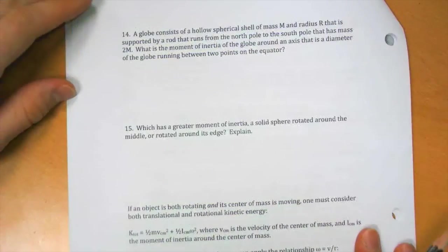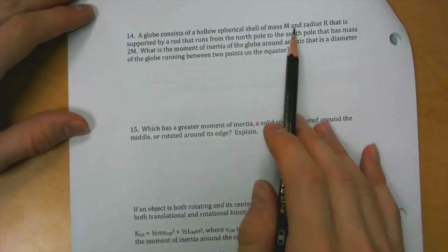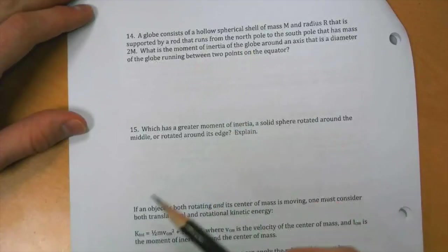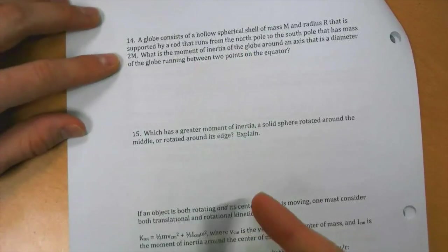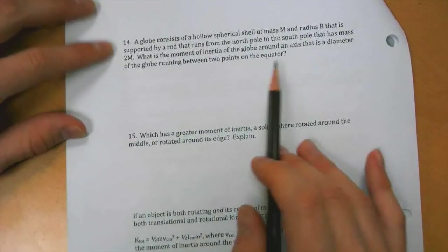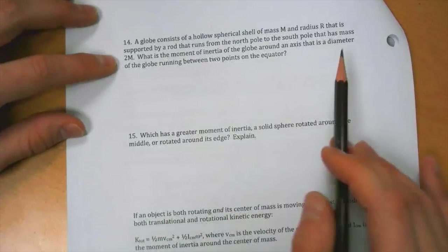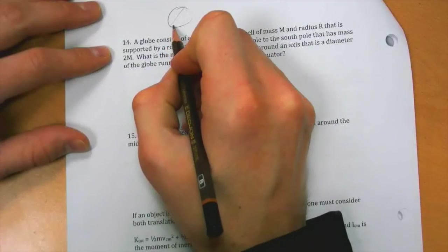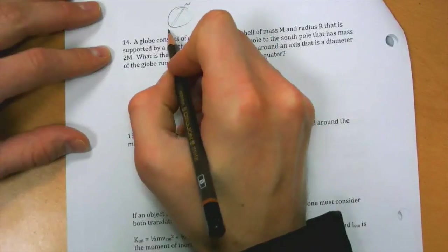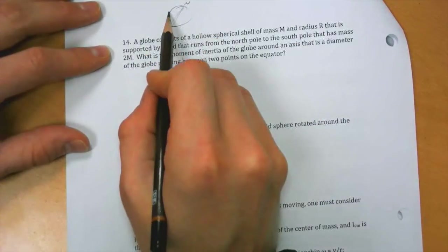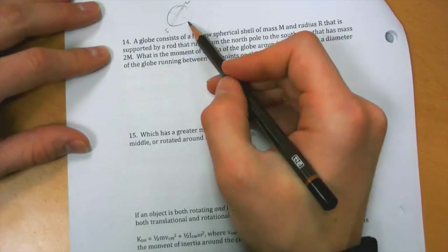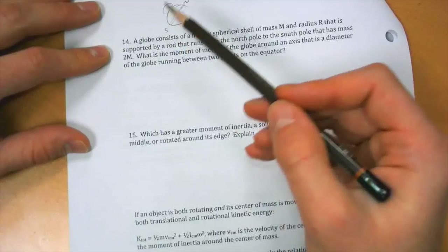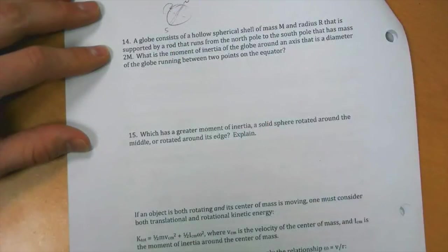So, a globe consists of a hollow spherical shell of mass m and radius r, supported by a rod that runs from the north pole to the south pole that has mass 2m. What's the moment of inertia of the globe about an axis that is the diameter running between two points on the equator? So we've got a globe and a rod running from north pole to south pole, and then the question is what's the moment of inertia if we rotate it around this, if we were to start spinning it this way?